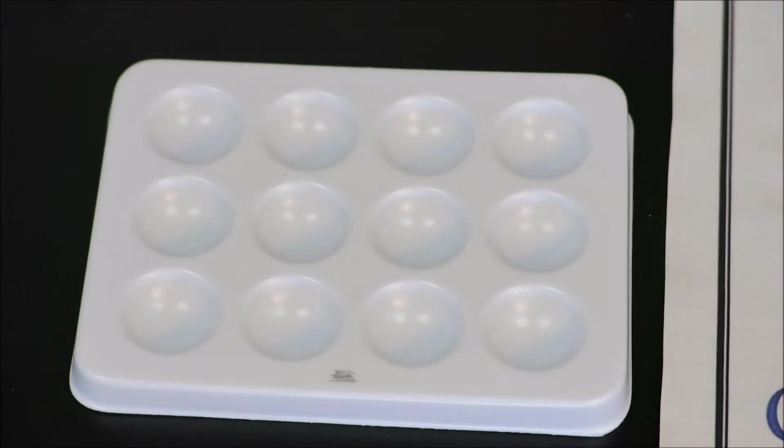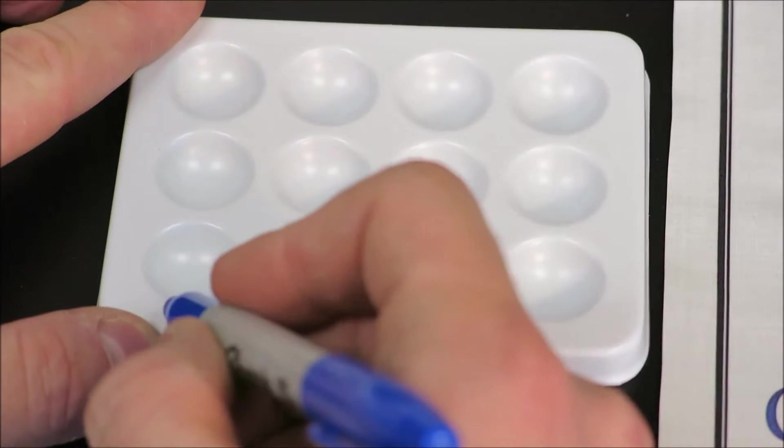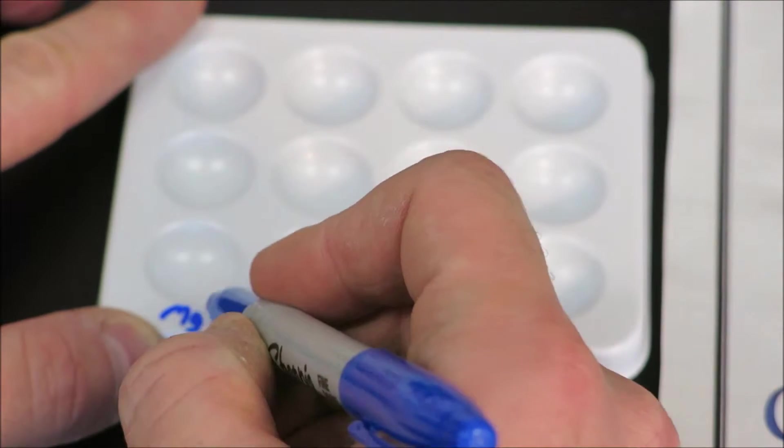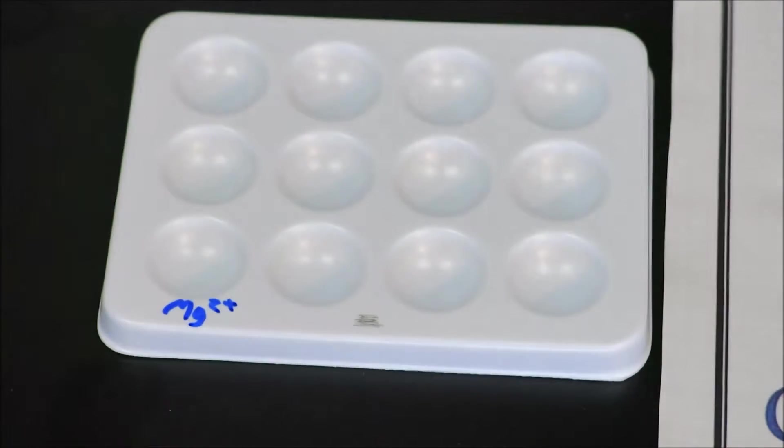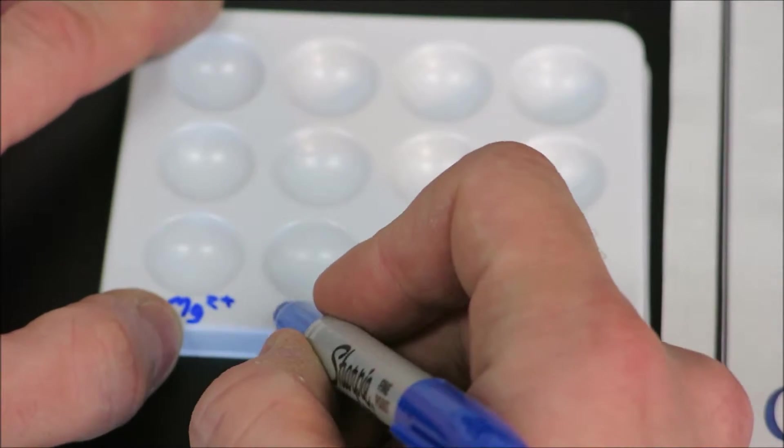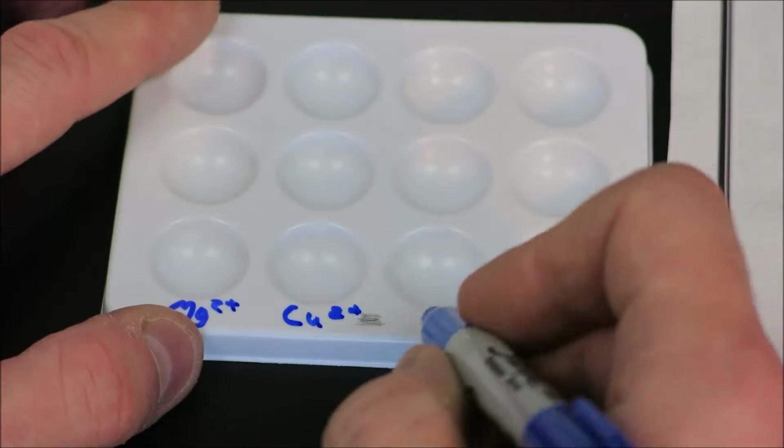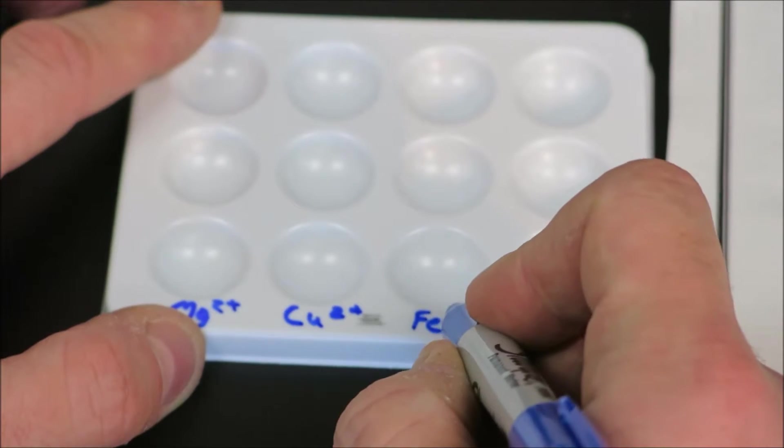To do this, we need to label our spot plate correctly, and in our reaction test here, we'll be testing our magnesium ions. So we'll use the columns here to indicate our metal ions. That first column will be magnesium ions. The second column will be copper two-plus ions. And our third column will be iron three-plus ions.